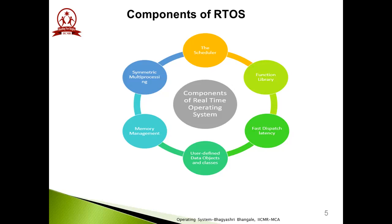The next component is memory management. The system allocates memory to every event and program. When the CPU generates a process with a logical address and after completion of execution, it requires memory to be allocated in main memory. Each and every event or process requires memory for storage. Next is fast dispatch latency, which is the interval between the termination of a task identified by the operating system and when it is actually taken by the thread. Processes ready for execution are stored in the ready queue and started processing for fast dispatch latency.